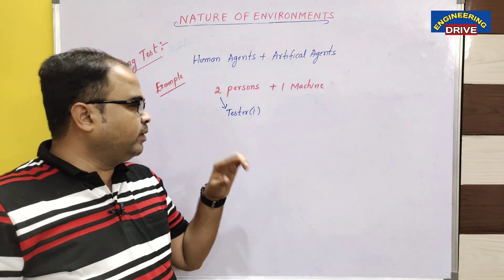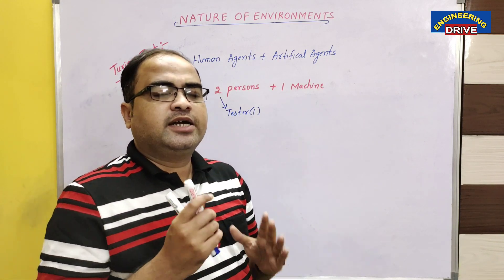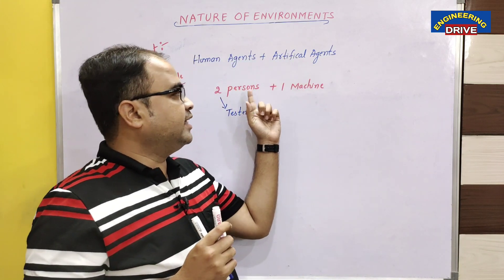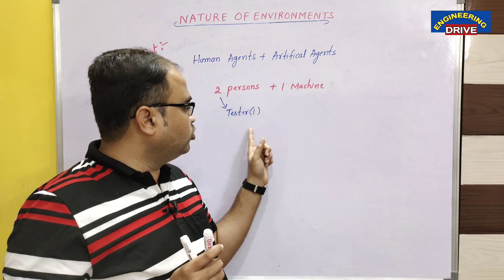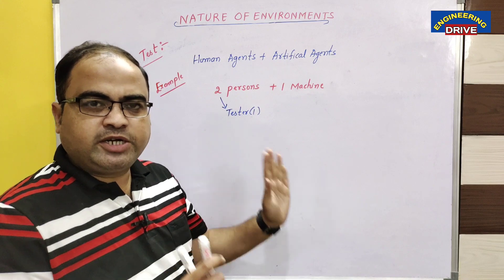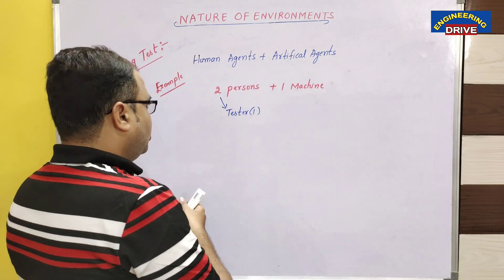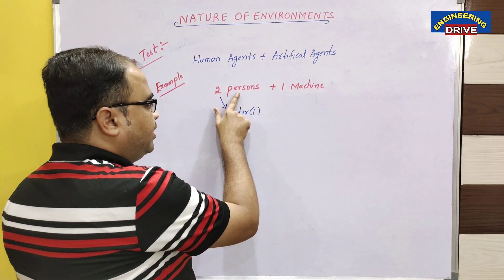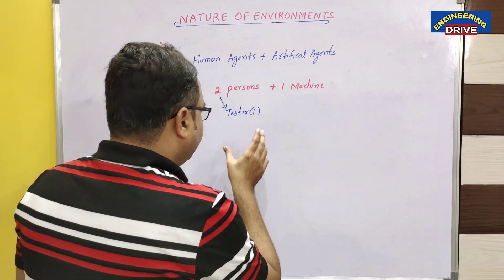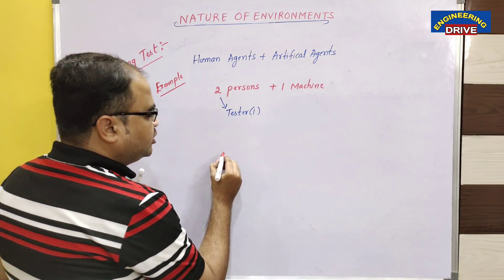You might wonder: what is the use of this third person, the tester? The purpose of the tester is to find out who is intelligent between them — whether the person is intelligent or the machine is intelligent. So the tester will do this work. These three entities — one human being, one machine, and one tester — participate in the Turing test, and all three will be in separate rooms.